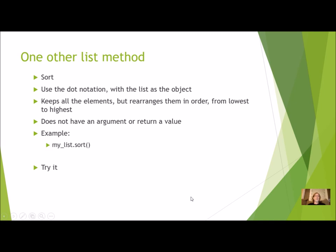So far, we have talked about one list method, and that is the append. There are several. We're going to take it slow and just introduce you to a couple of them at a time. I'm only going to talk about one other list method for this program, and that's the sort method. Since it is a method, you will use the dot notation, and the list variable is going to be the object in front of the dot. It's going to keep all the elements in the list, but it will rearrange them in order from lowest to highest. This method does not have an argument or return a value.